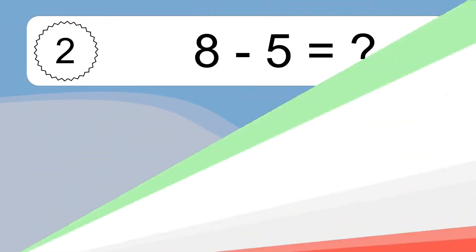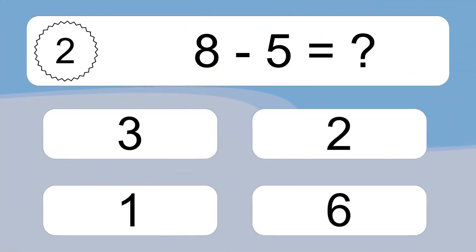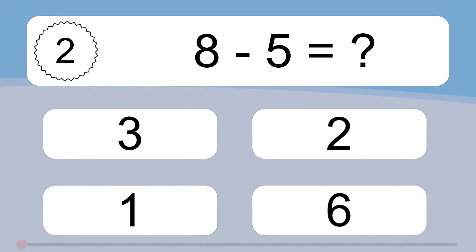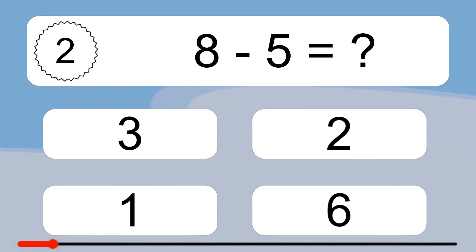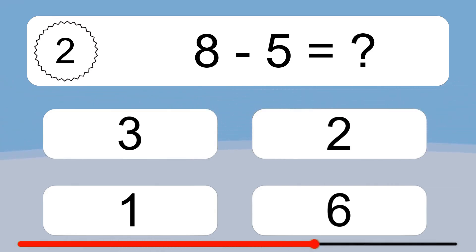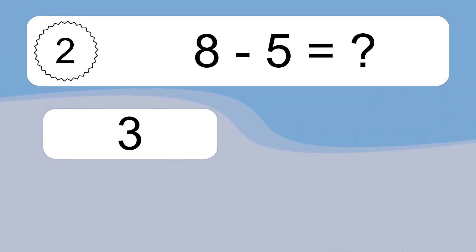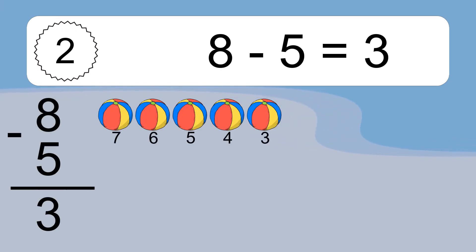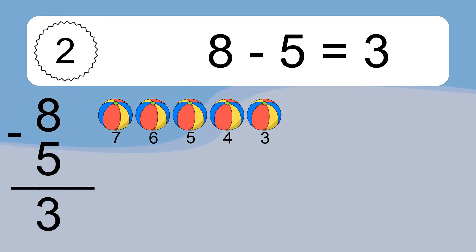8 minus 5 equals what? 8 minus 5 equals 3. Let's count it. 7, 6, 5, 4, 3.